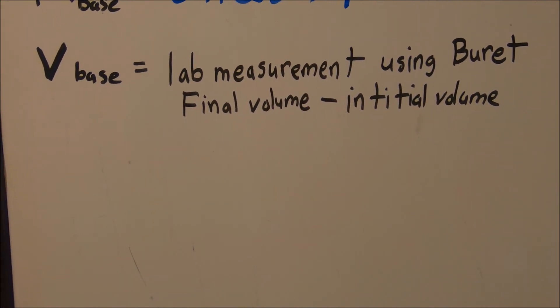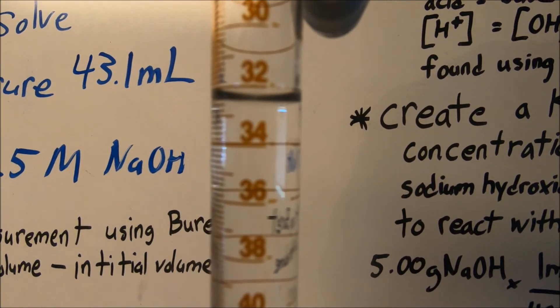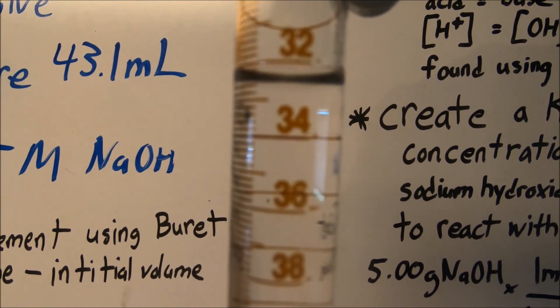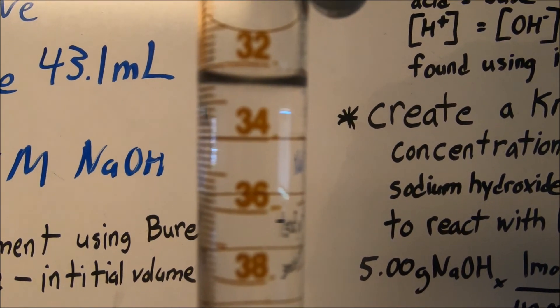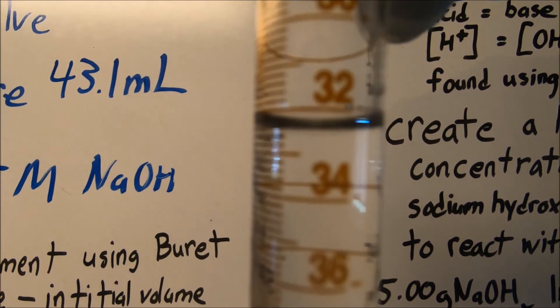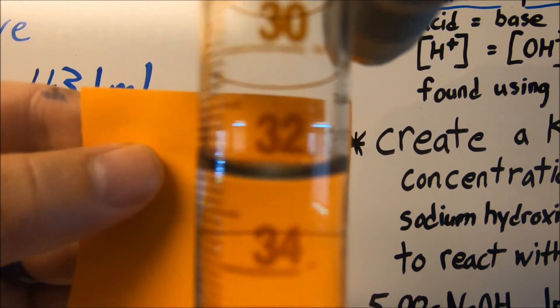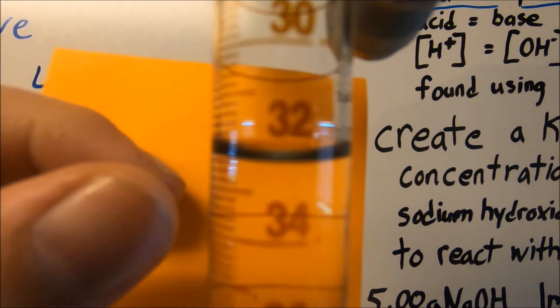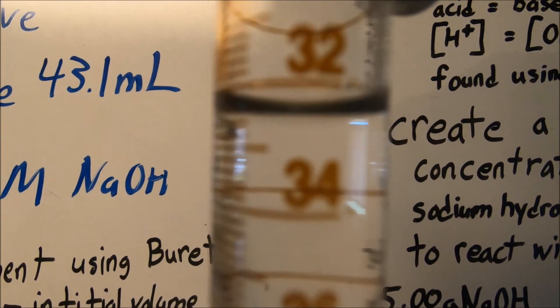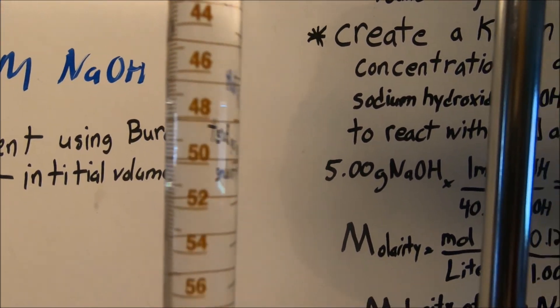Using our burette, it's set up so that we can measure very small amounts, accurate amounts of the sodium hydroxide base that's being used. Right now measurement wise, it might be difficult to see, we're somewhere between 32 and 33. We're not at the 32 mark, so these measure by two tenths: 33.2, 33.4, 33.6 will be our measurement to begin with.